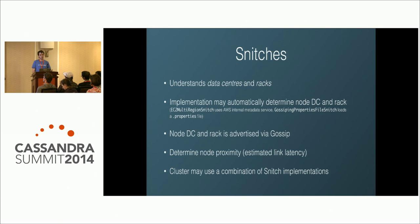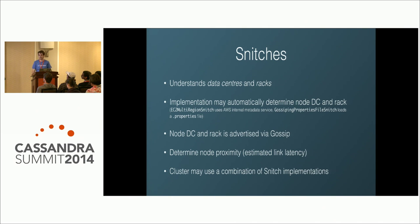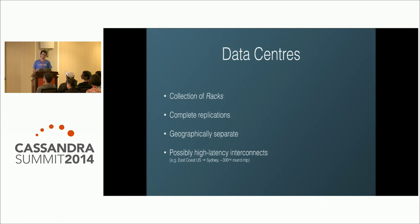Every node in a cluster will eventually determine which data center and rack any other node is located in. This also allows nodes to determine proximity with each other, giving an estimate of link latency, so nodes that are close together establish connections preferentially. Your application can also connect to the closest nodes. Notably, you can have multiple snitch implementations in a single cluster — for example, using the EC2 snitch on EC2 and a custom one on Rackspace.